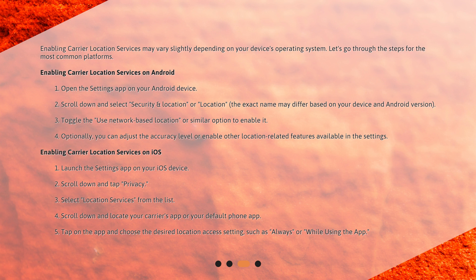To enable Carrier Location Services on iOS: 1. Launch the Settings app on your iOS device. 2. Scroll down and tap Privacy. 3. Select Location Services from the list. 4. Scroll down and locate your carrier's app or your default phone app. 5. Tap on the app and choose the desired location access setting, such as Always or While Using the App.